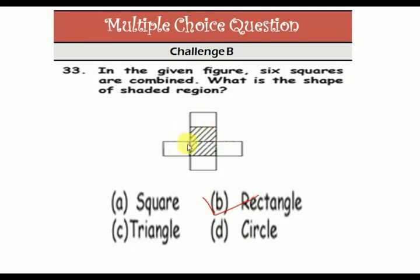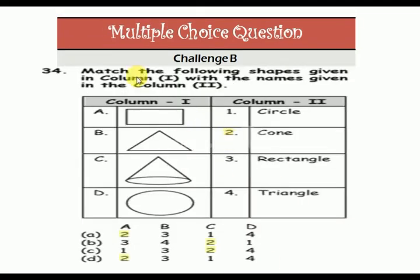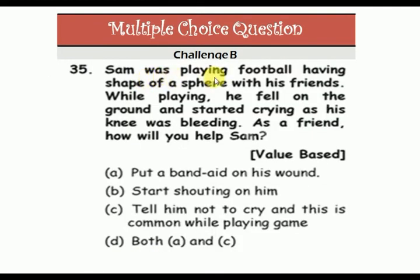The answer is rectangle. Now match the following shapes given in column one with the names given in column two. Rectangle equals three, then four, then two, then one. The answer is: three, four, two, one.